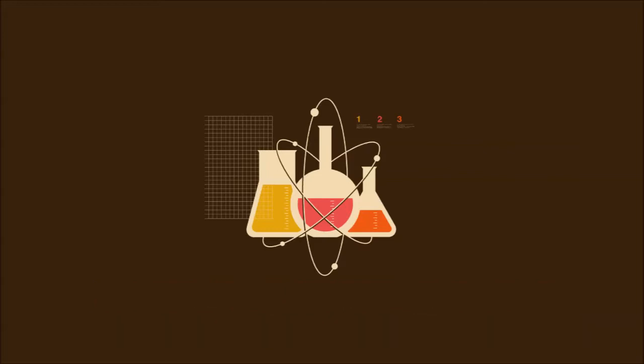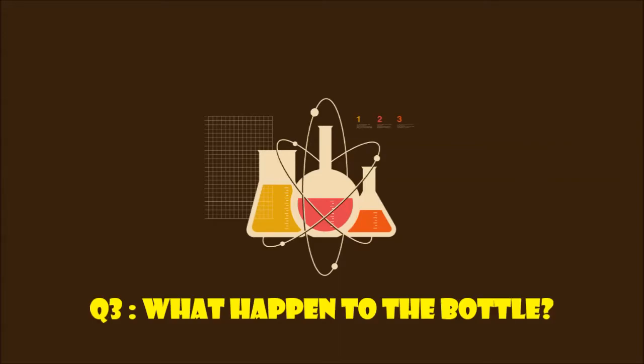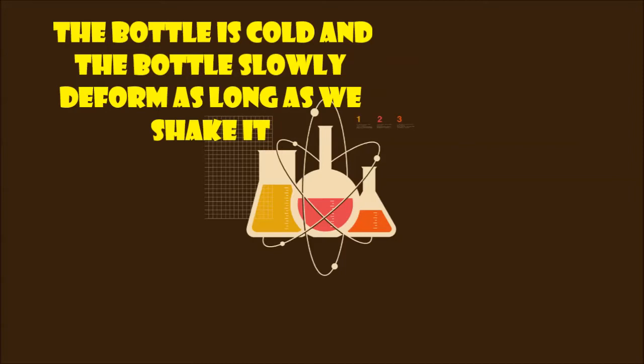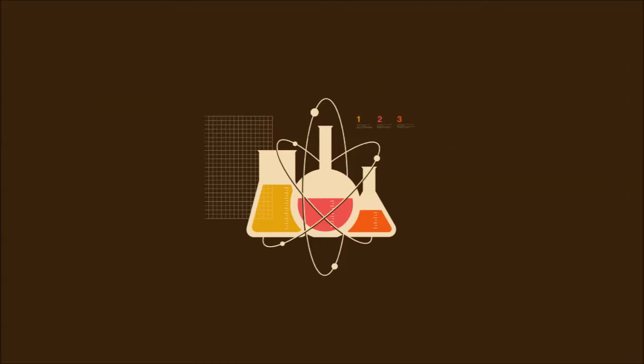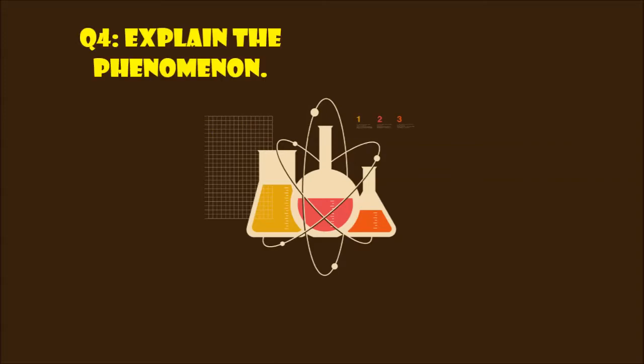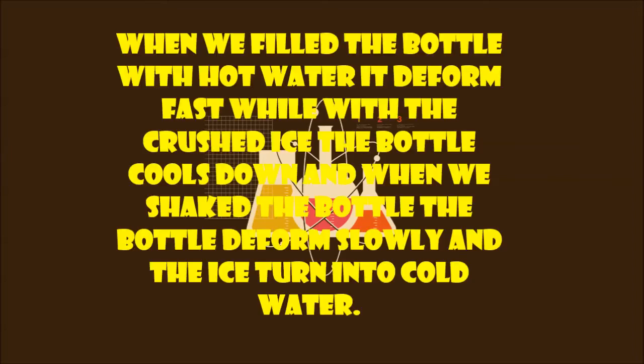Question number 3, for Procedure B: What happened to the bottle? Our answer: The bottle is cooled, and the bottle slowly deformed as long as we shake it. Question number 4, for Procedure B: Explain the phenomenon. Our answer: When we filled the bottle with hot water, it deformed fast. While we filled the bottle with the crushed ice, the bottle cools down. And when we shake the bottle, the bottle deformed slowly and the ice turned into cold water.